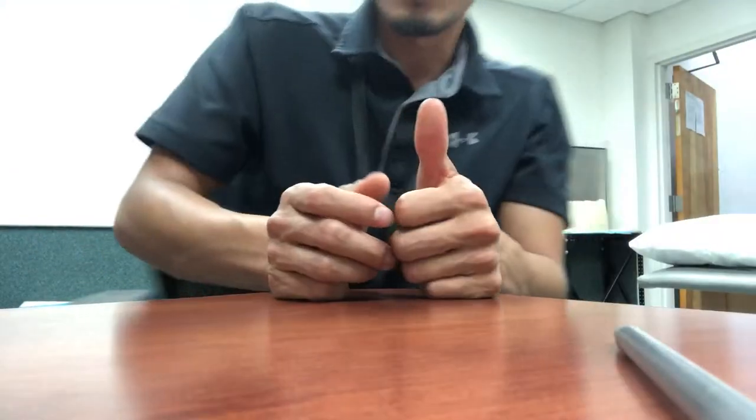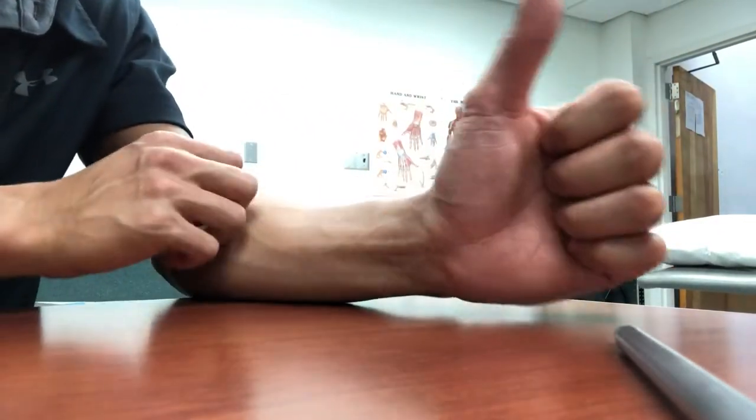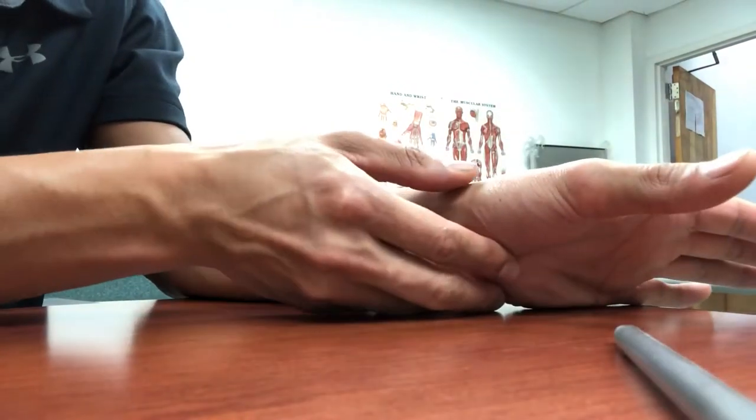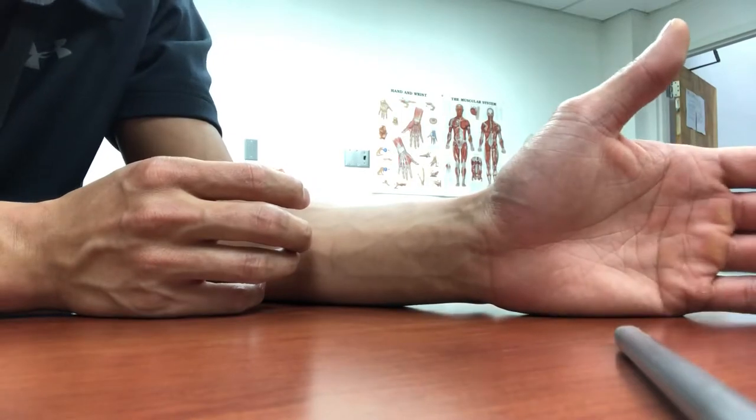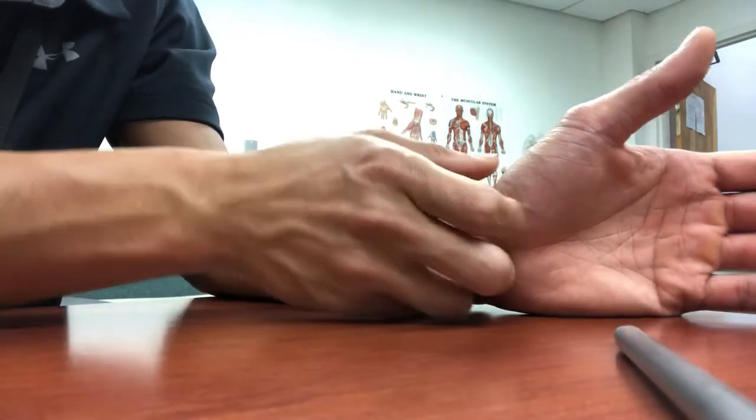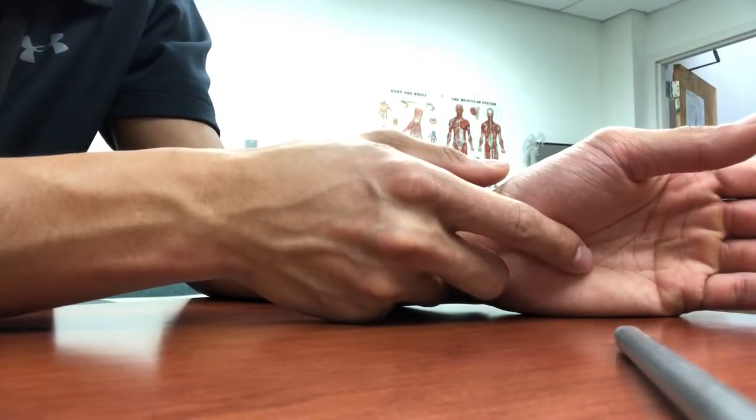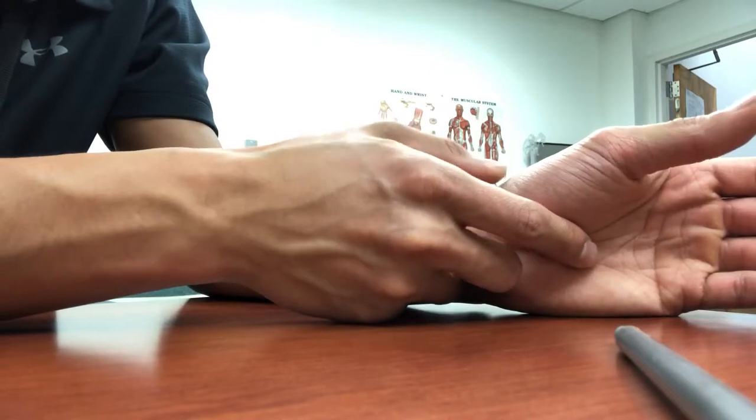Let me do it on the other side and see if this works better. I'm going to bring my thumb up. Make sure that your forearm is rested on the table so it's nice and stable. You come up with your thumb as you press down onto that tendon.